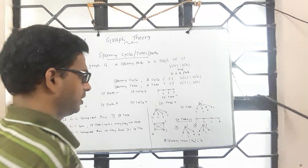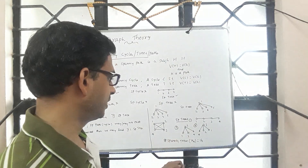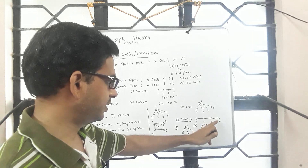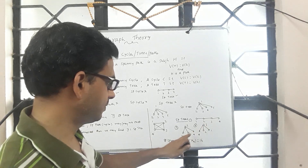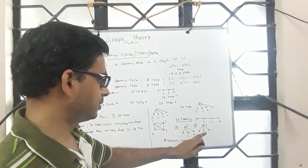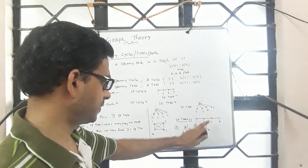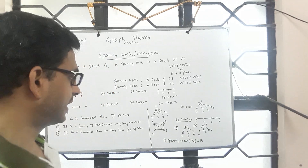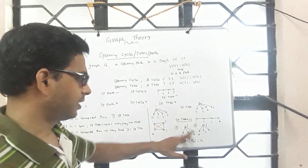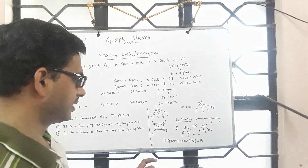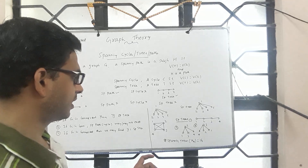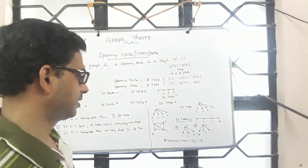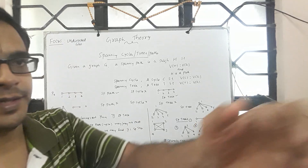These spanning trees are all different from each other — for example, edge 3-4 is present in one spanning tree but not in another. You can start listing different spanning trees, and it turns out that for K4 the number of spanning trees is 16, which you can verify later.